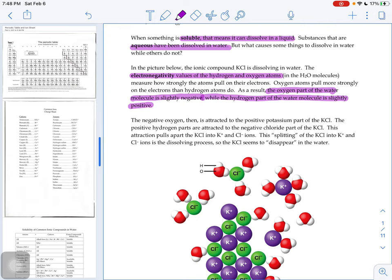And so the positive hydrogen parts of a water molecule are attracted to the negative chloride part of the KCl. This attraction pulls apart the KCl into K+ and Cl- ions. And the same thing happens with that oxygen being attracted to the positive part of the KCl. Basically, the water goes in and pulls that potassium chloride crystal apart.